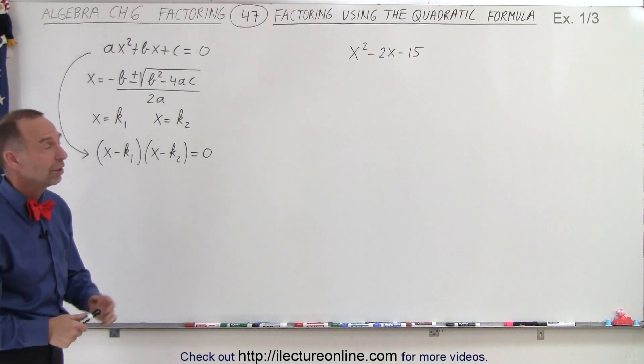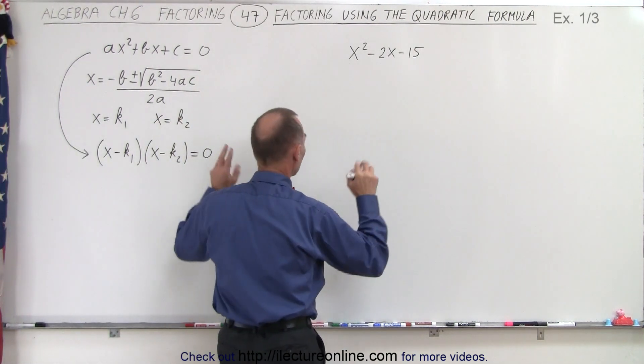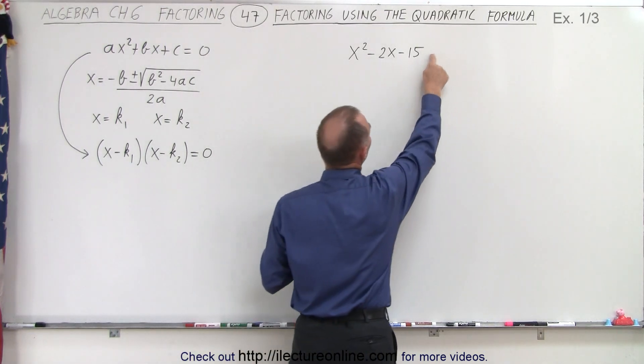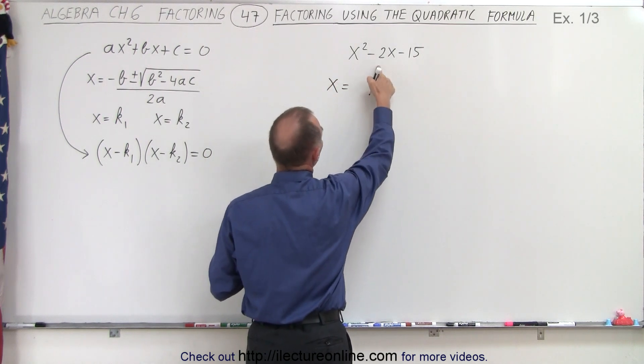So let's see what that looks like using a regular example. Again, we're going to solve that quadratic formula. We're going to imagine this is equal to zero. That means that x, therefore, is going to be equal to -b,